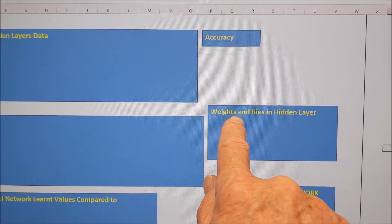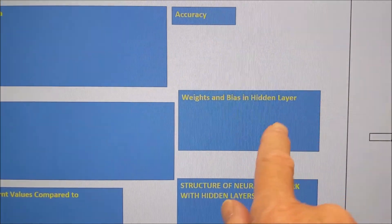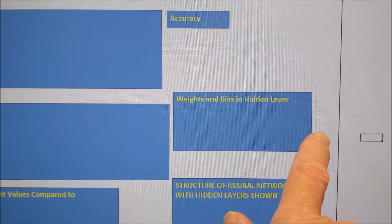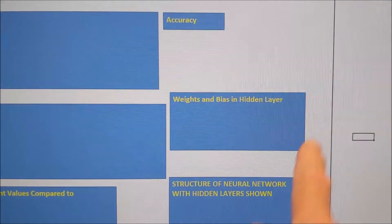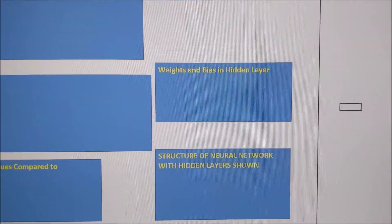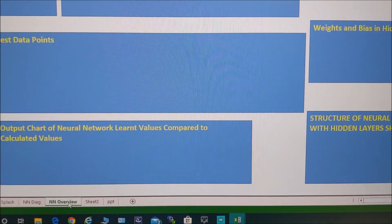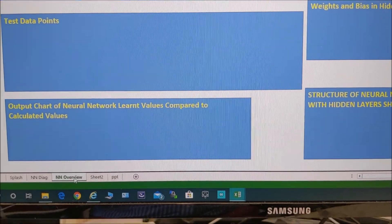We have weights and bias in the hidden layers. Why are they hidden? Well, they don't mean much to us, but they mean a lot in the calculations. We have a structure of the neural network. We'll come onto that too. And then the output chart. Let's have a quick look at the output chart first.